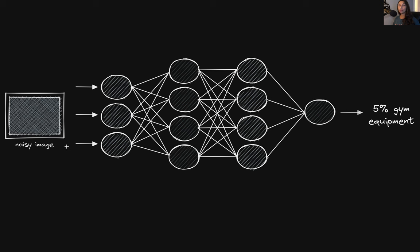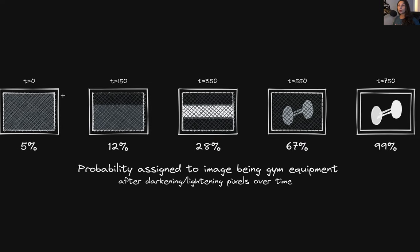Suppose that instead of passing an actual image of gym equipment, we pass this very noisy 28 by 28 image to our classifier. Since this does not look like gym equipment, the model tells us there's only a 5% probability that it assigns to this image actually being of gym equipment. So what we can do is iterate over each of the 784 pixels in this 28 by 28 image and make each pixel either a little bit darker or a little bit lighter, then pass that updated image to the model and see how it changes the probability assigned to the image being gym equipment.